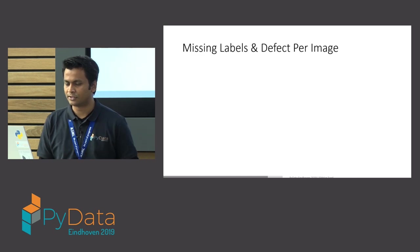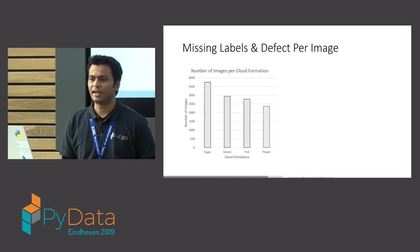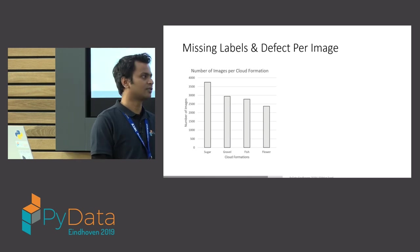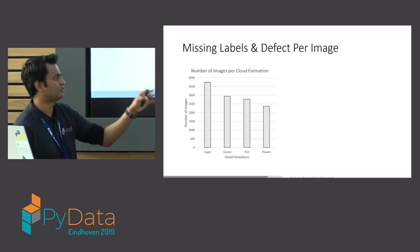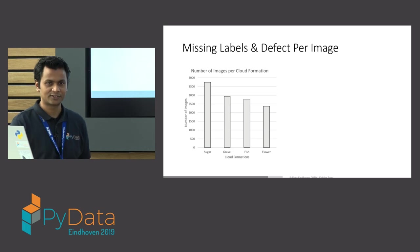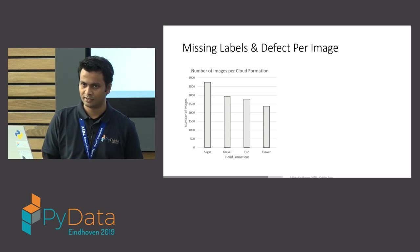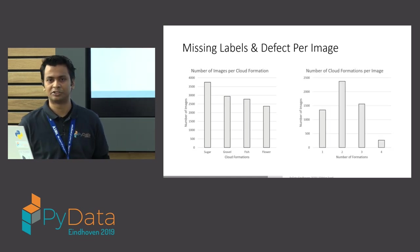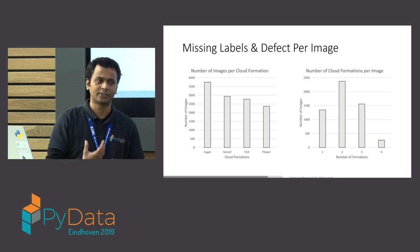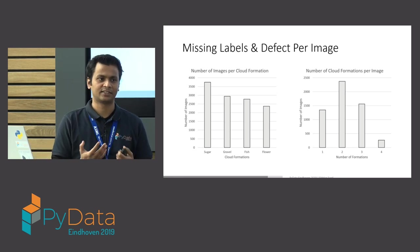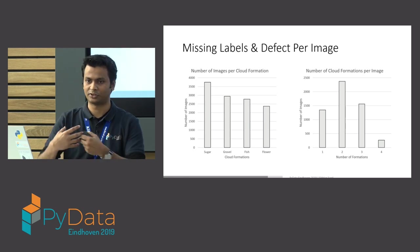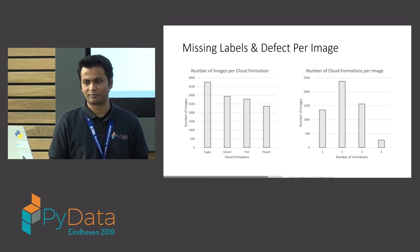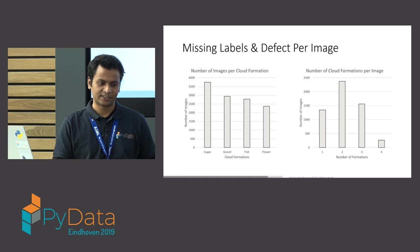As always, check out the number of labels and what kind of formations you have per image. There are four types of cloud formation — they call them sugar, gravel, fish, and flower. And for once it's not imbalanced, which makes it a nice competition. If you look at the number of cloud formations typically found in a single image, it's actually more than one — you would find two to three per image. So it's good to understand that so you don't start chopping up the image and feeding just portions to the network — the network needs more context in that case.